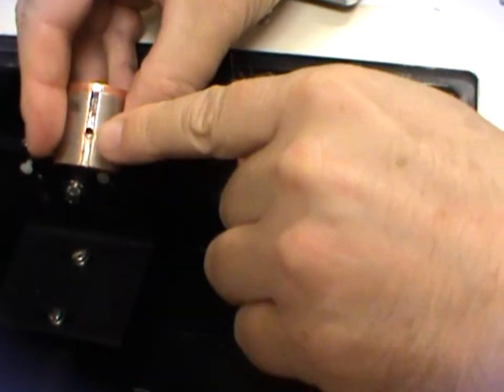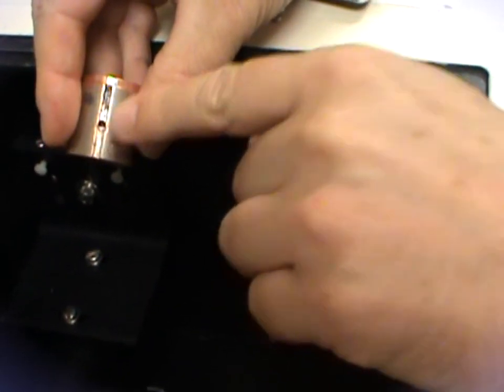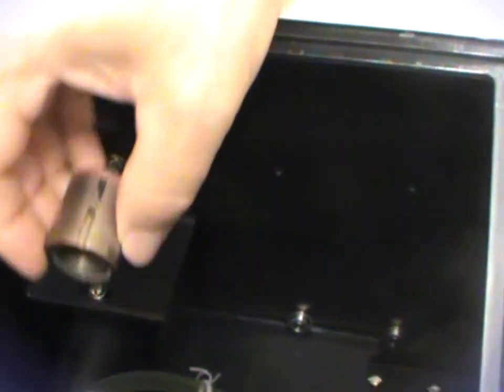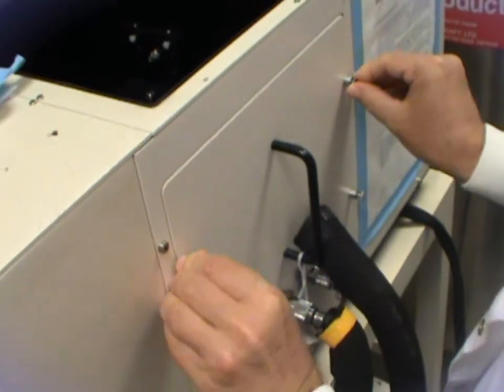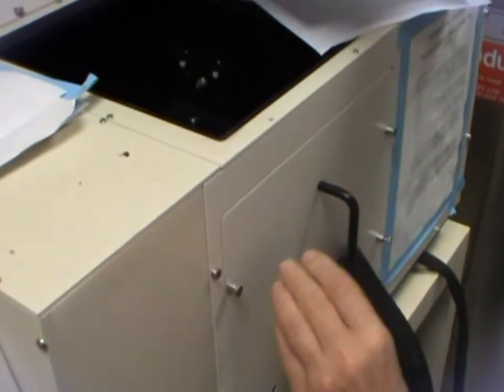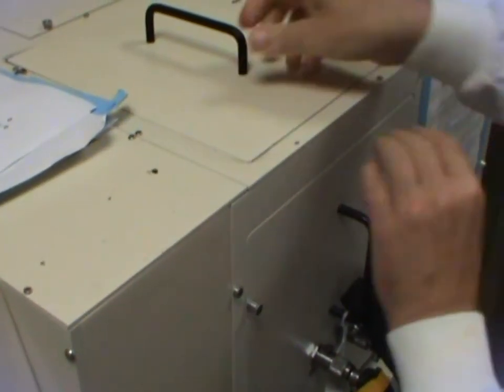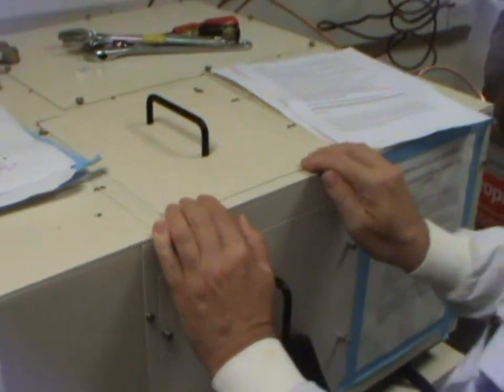Also make sure you have a mark on the cell holder to align the cell in the cell chamber. Close this up and wait a couple of minutes for it to flush with nitrogen.